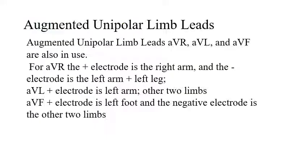Now let's talk about the other three limb leads, called augmented unipolar limb leads. They are called unipolar because, although they have positive and negative leads, the negative leads are indifferent — they cancel each other — so we treat them as if there is only one positive electrode.